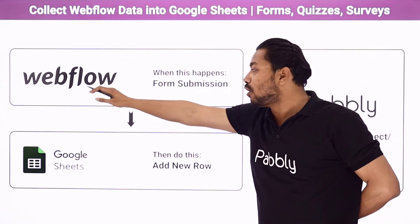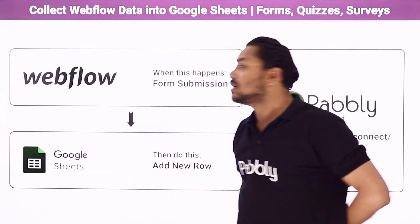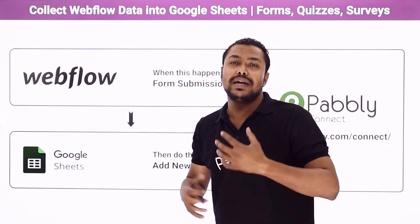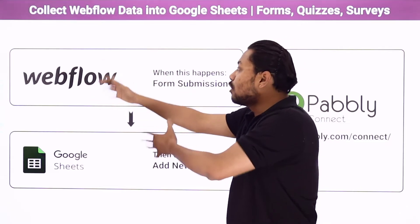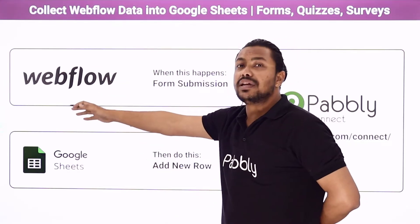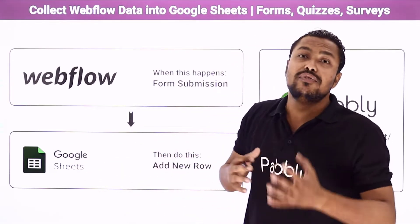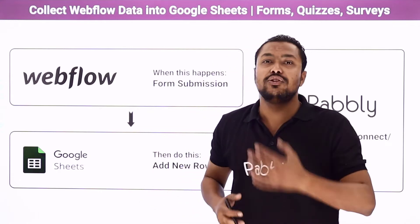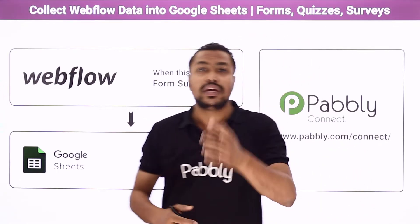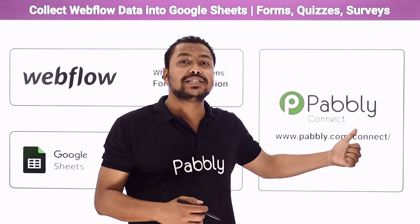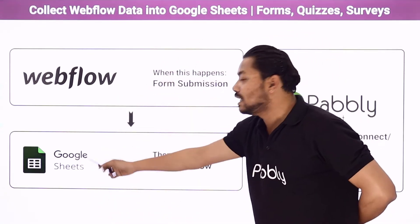We are using Webflow forms as the trigger and Google Sheets as the action step. Whenever somebody fills a form through your Webflow account, the details from the Webflow form will go to Google Sheets and be saved in a database which you can later access and use for several different purposes. To do this automation we are going to use Pabbly Connect, an integration and automation service which will help us connect Webflow and Google Sheets together.